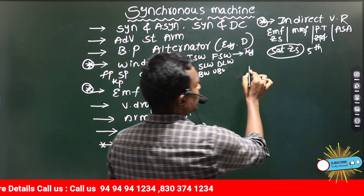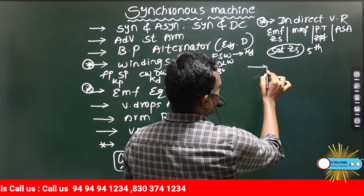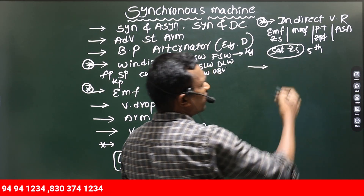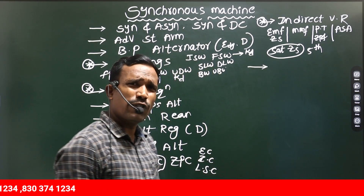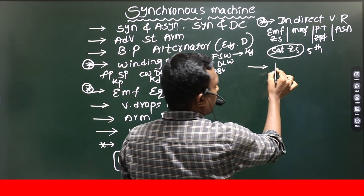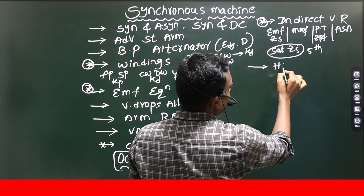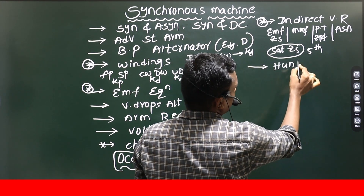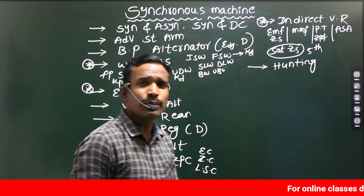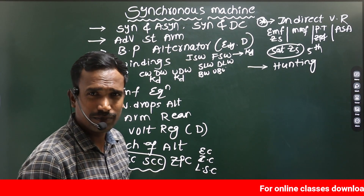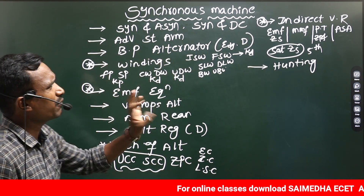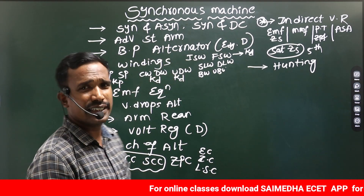After the indirect voltage regulation methods, we need to discuss hunting — what is hunting and how we can eliminate it. Up to this point covers the alternators part specifically.